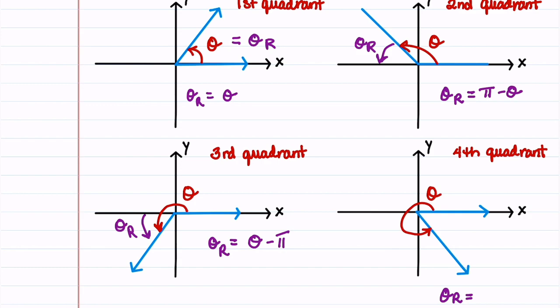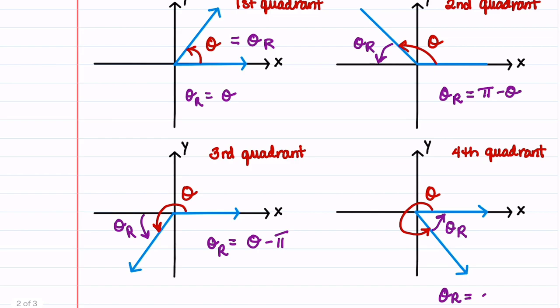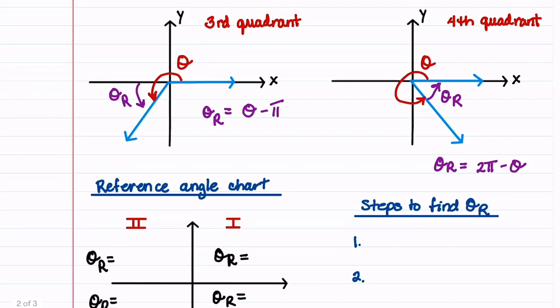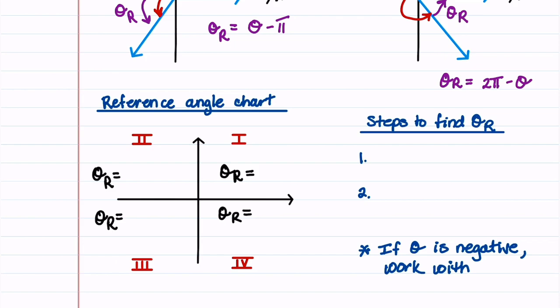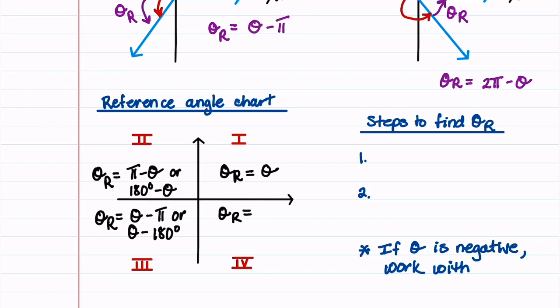Lastly, when theta is in the fourth quadrant, theta sub r is 2 pi minus theta. Let's now create a reference angle chart that's easy to memorize. In the first quadrant, theta sub r equals theta. In the second quadrant, theta sub r is pi minus theta, or 180 degrees minus theta. In the fourth quadrant, theta sub r is 2 pi minus theta, or 360 degrees minus theta if working in degrees.